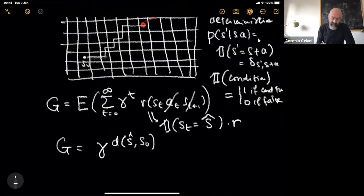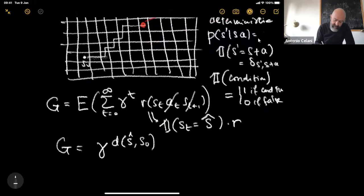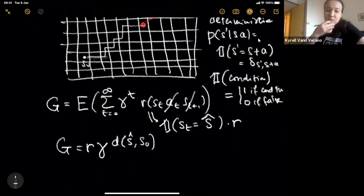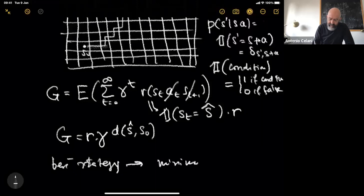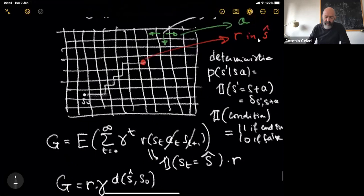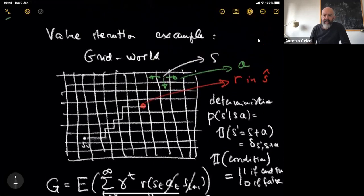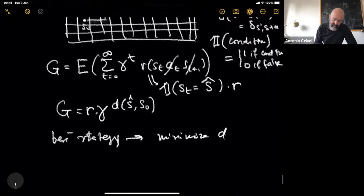A student points out the missing r prefactor — thank you. The best strategy is therefore to minimize the distance d. This grid world problem with a single reward point is equivalent to finding the shortest path from any point to the target.